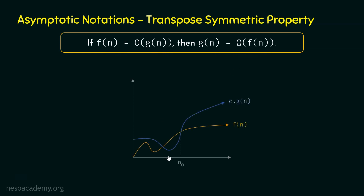From the graph, it is clear why the transpose symmetric property is true. As we can observe after N₀, G(n) grows asymptotically bigger than F(n), so clearly G(n) is the upper bound of F(n). We can say F(n) is O(G(n)), and we can also say G(n) is Ω(F(n)) because F(n) grows asymptotically lesser than G(n). Graphically, it is clear that this property holds.